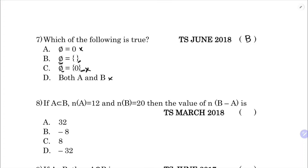Eighth question: if A is a subset of B with n(A) = 12 and n(B) = 20, find n(B minus A). Since all elements of A are in B, n(B minus A) equals n(B) minus n(A) equals 20 minus 12 equals 8. All 12 elements of A cancel out. The correct option is C.